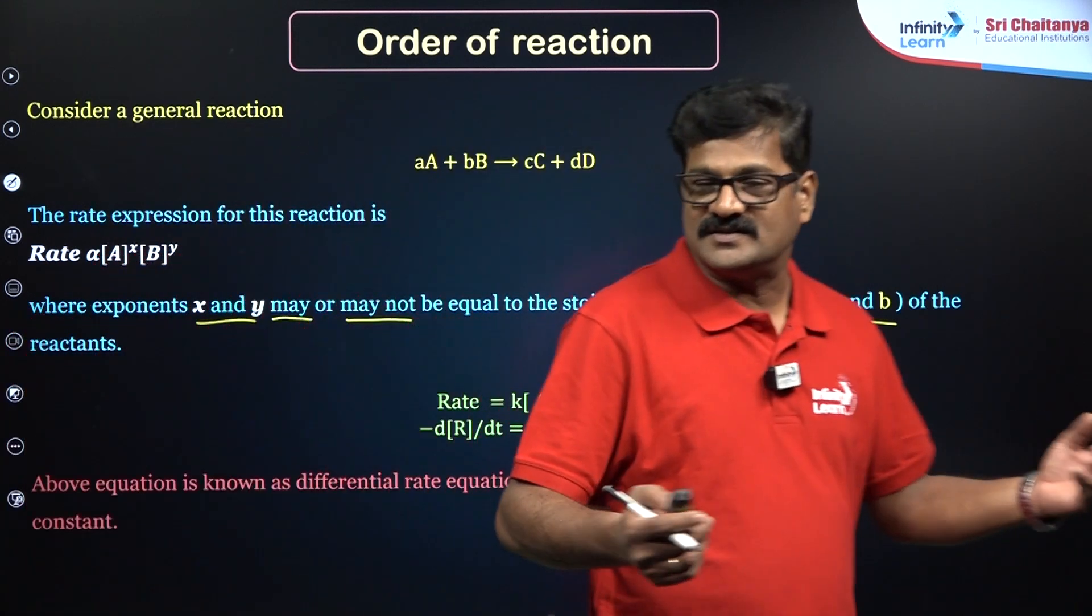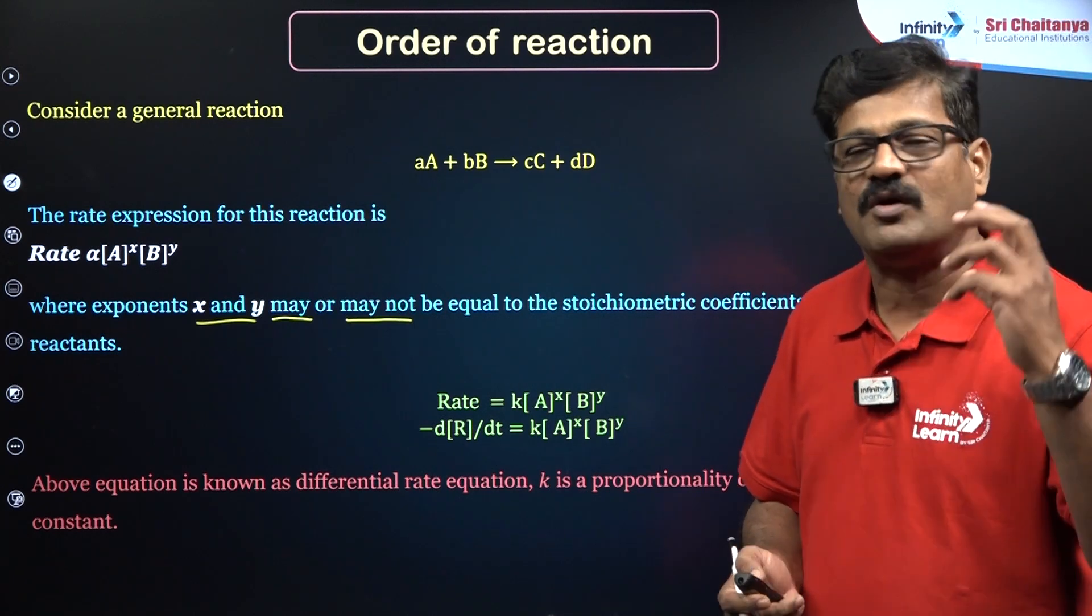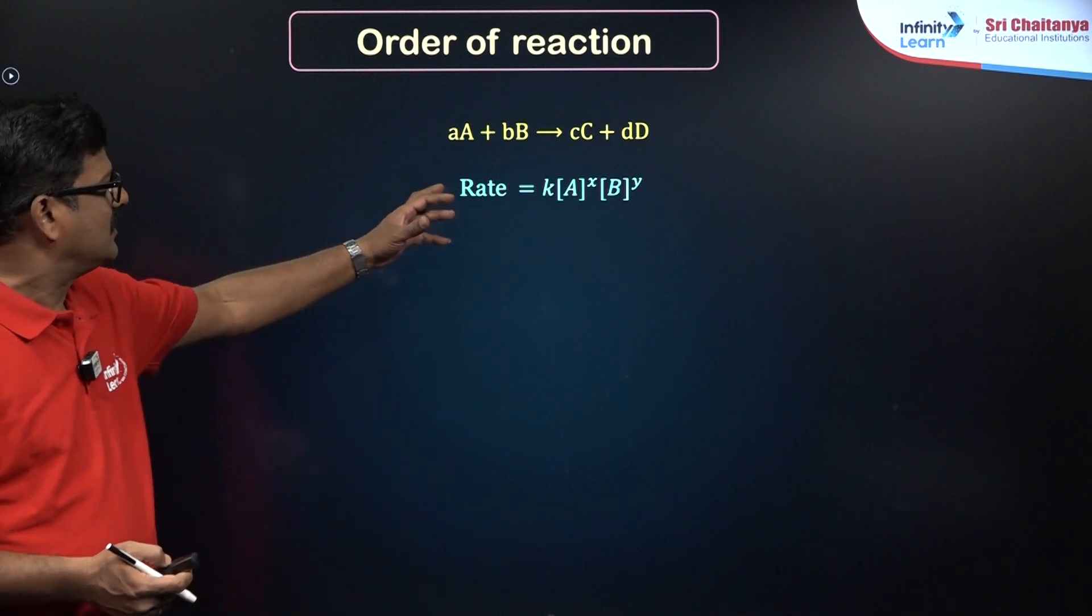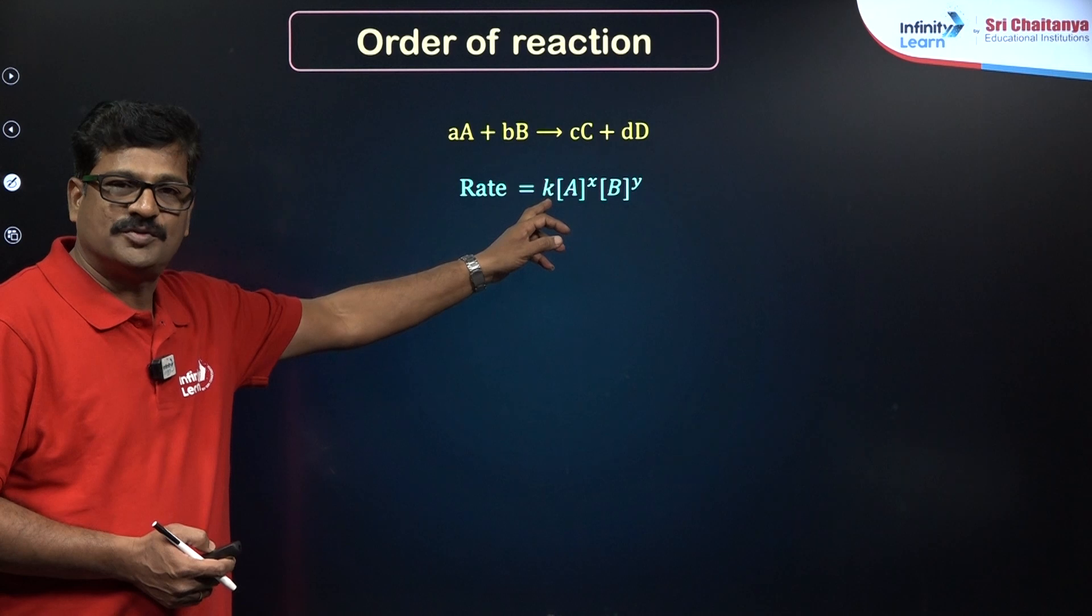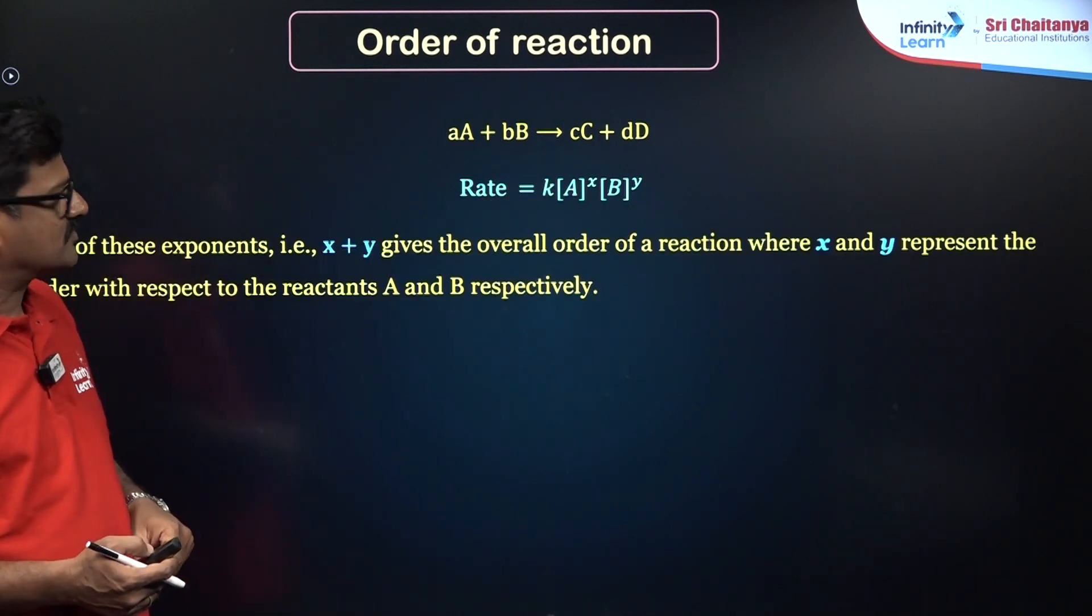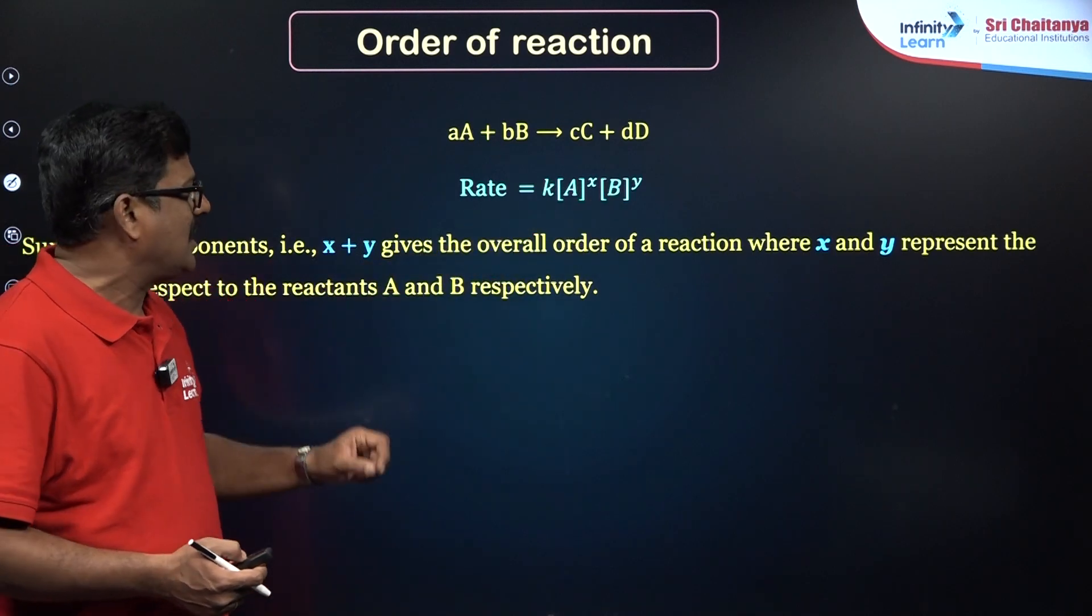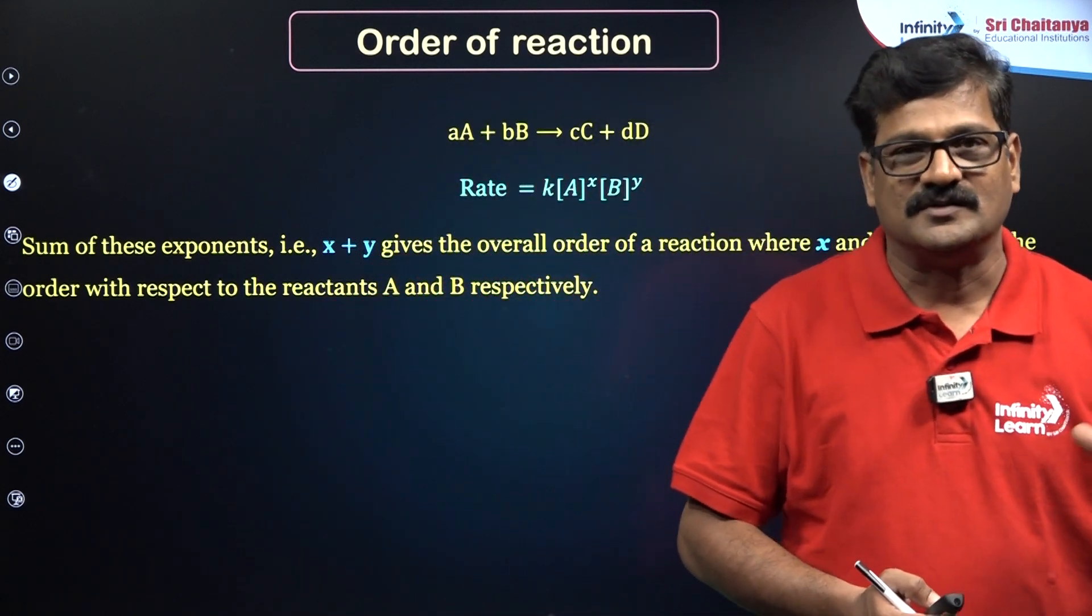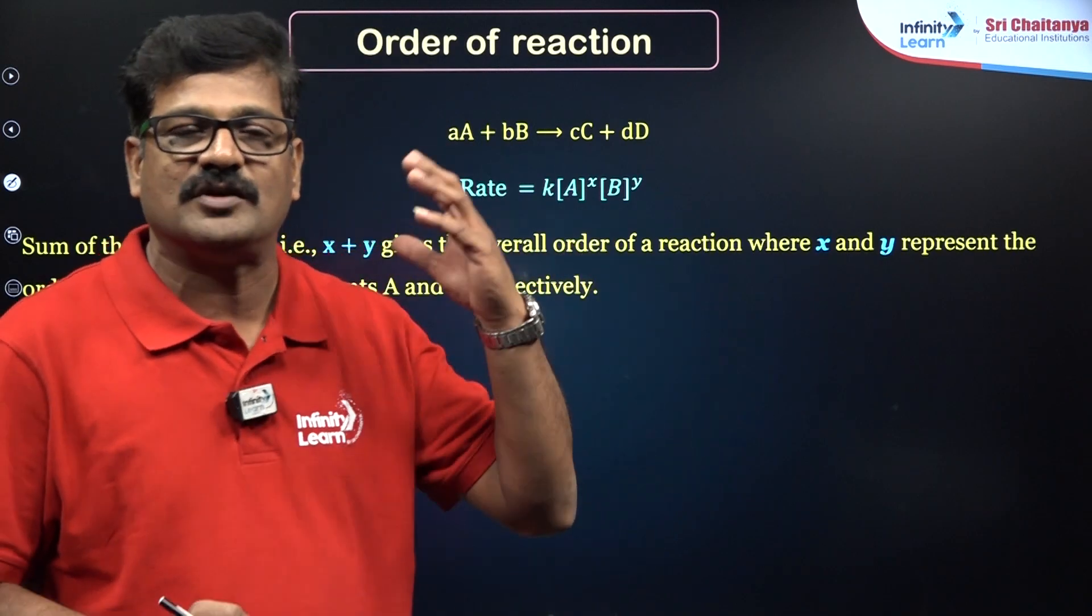When you talk about this rate law expression, rate = K[A]^X[B]^Y, we can say X is the order with respect to A, and Y is the order with respect to B. And X + Y is said to be the overall order of a reaction. The overall order of a reaction is experimentally determined, and that is the actual behavior of the speed of the chemical reaction.